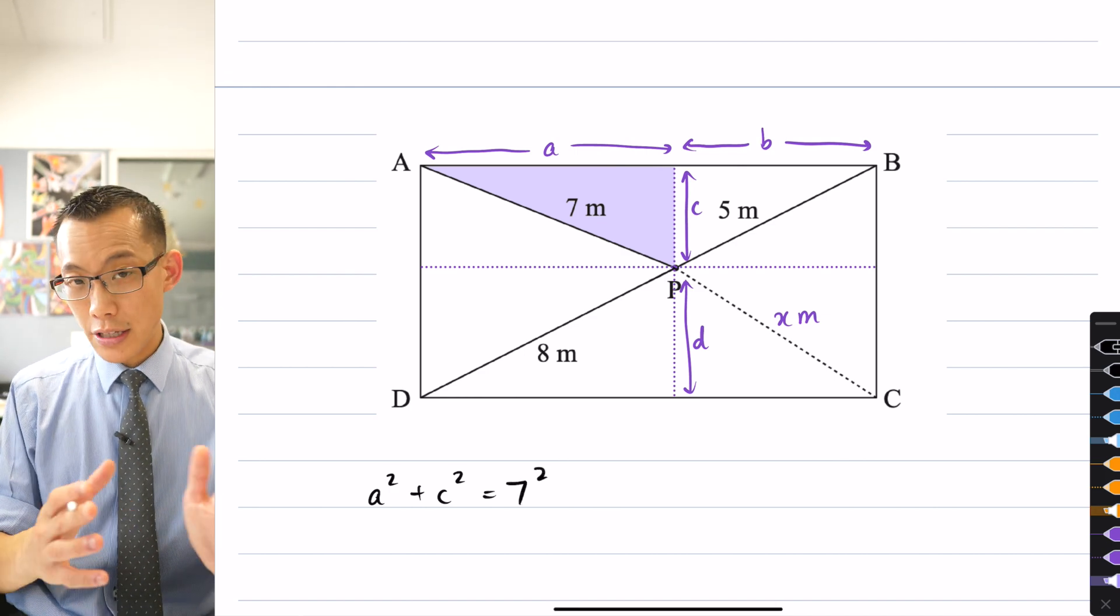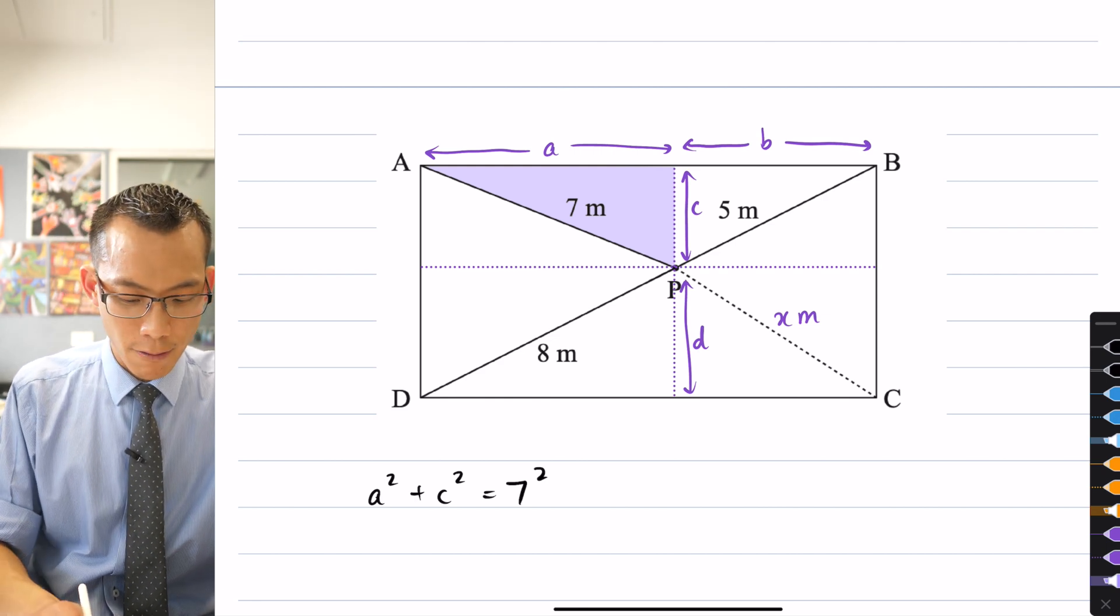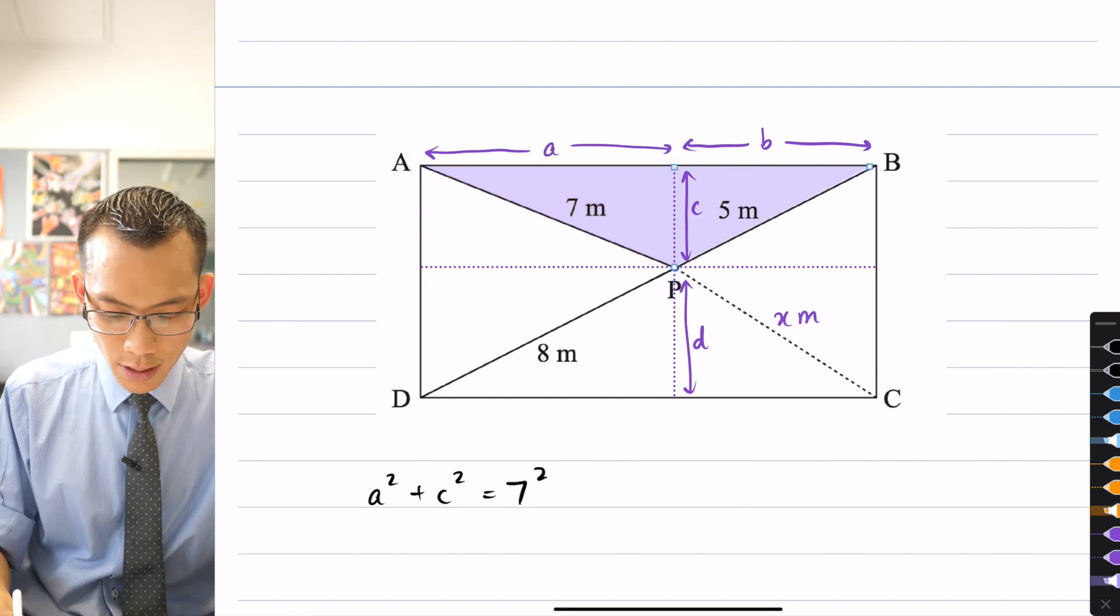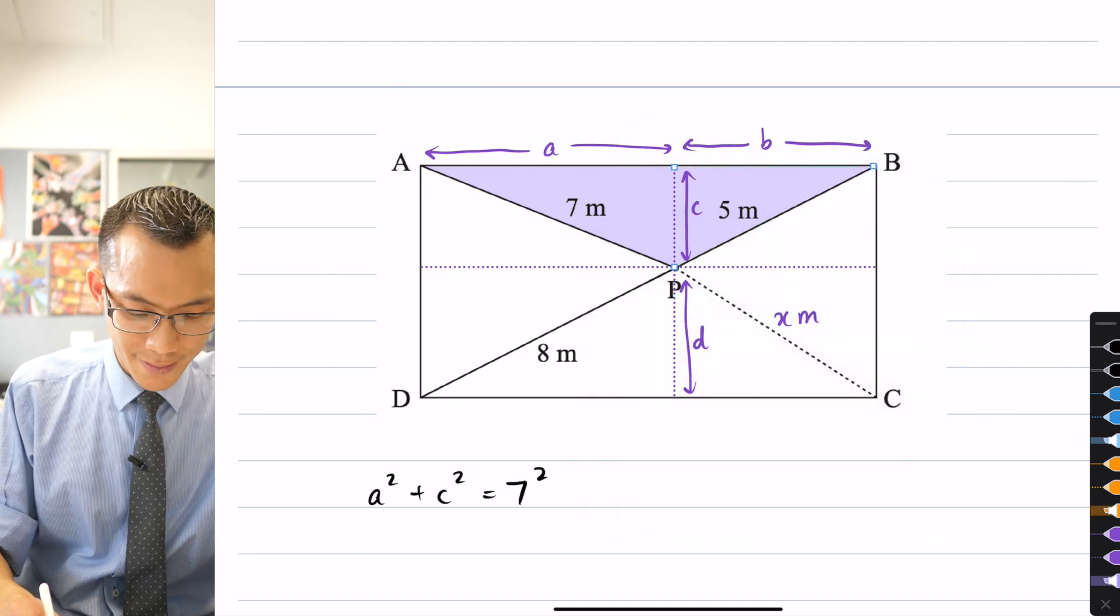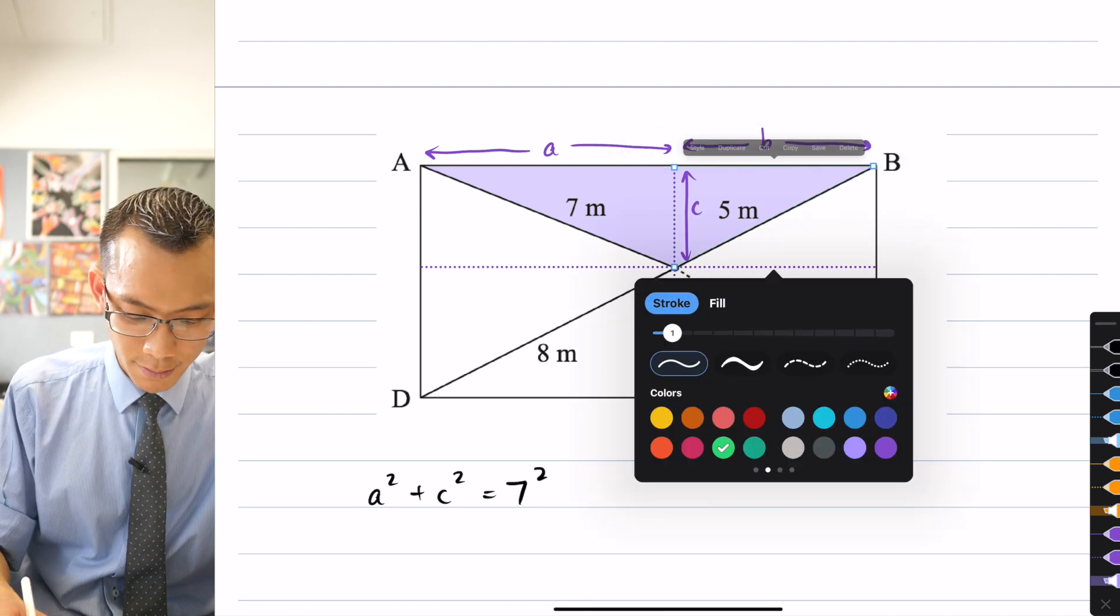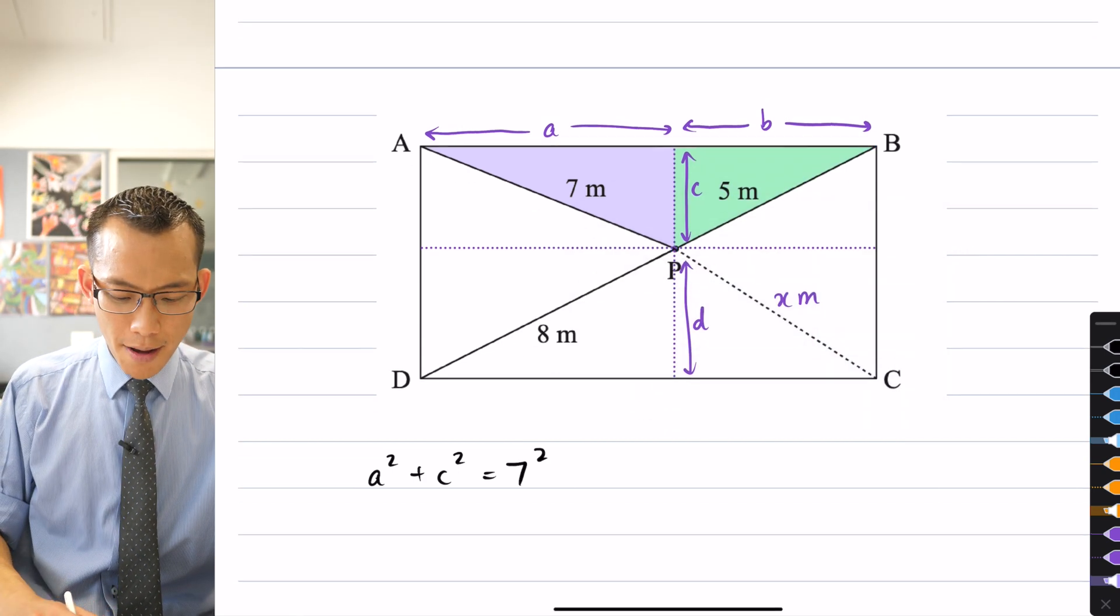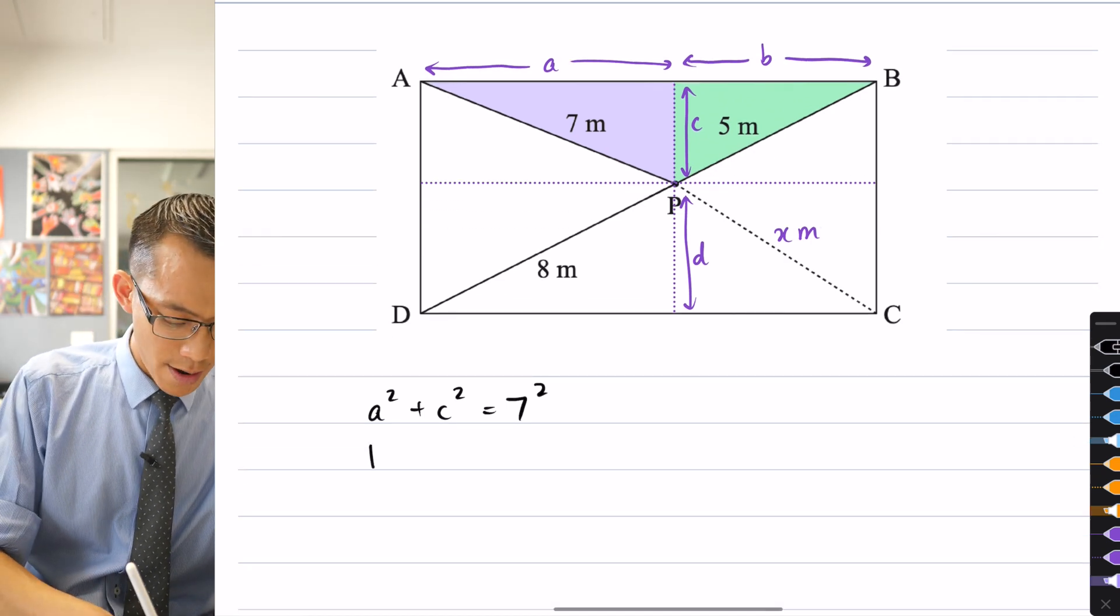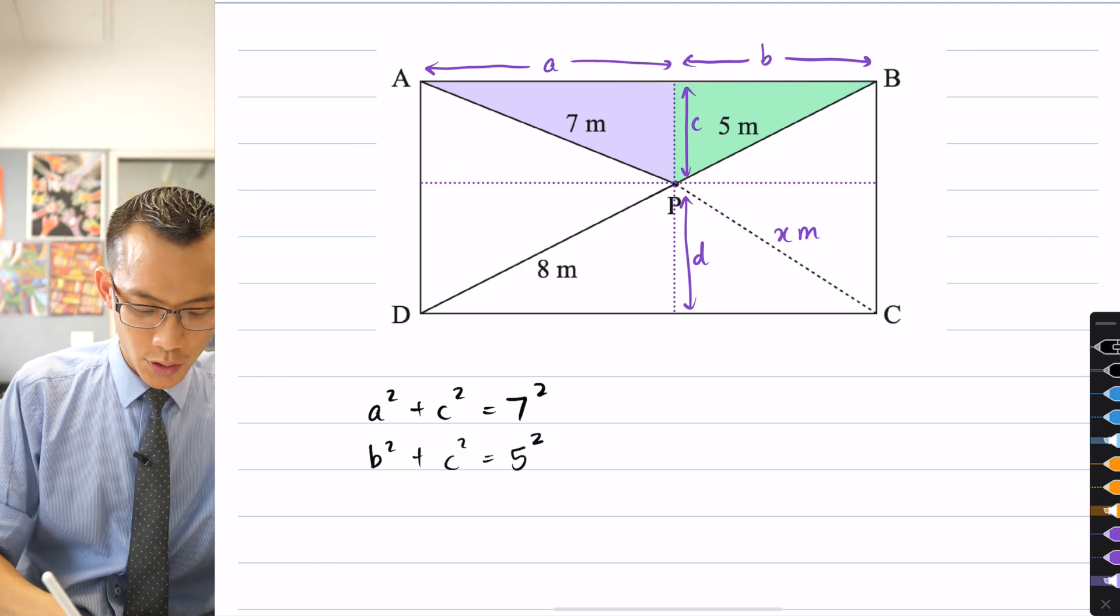Now, if you have a look over to the other side, this purple triangle is not the only one that C appears in. I will just choose a different color so it's a bit easier for you to distinguish. You can see here, I don't have A² and C². I've got B² and C². So if I combine those two together, B² + C² = 5².